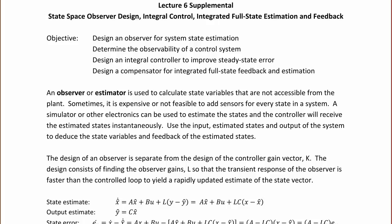The design of an observer is separate from the design of the controller gain vector k, which we did in the last lecture. The design consists of finding the observer gains L so that the transient response of the observer is faster than the controlled loop, to yield a rapidly updated estimate of the state vector.